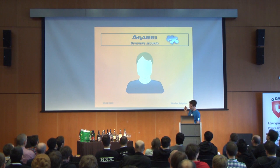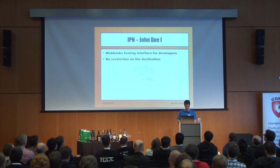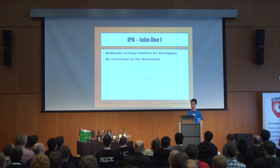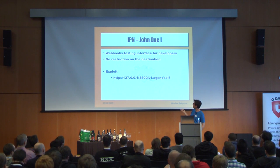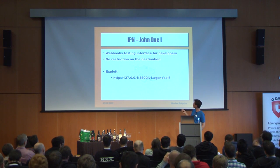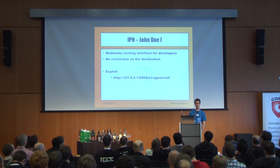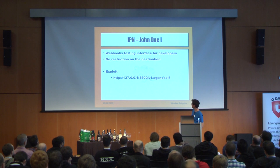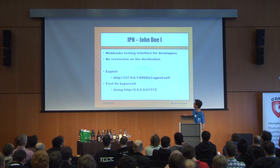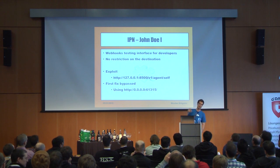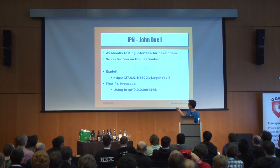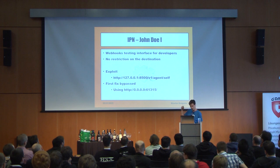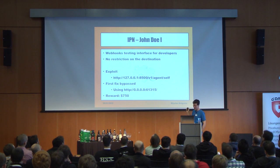A private bounty program — let's call it John Doe number one. Callbacks, again, with no restriction — absolutely wide open. I port-scanned the loopback interface, found the default port of Consul, and was able to interact with the agent and retrieve information. They fixed the bug, then I used 0.0.0.0 to bypass the fix. I also found the SSH port. $750 for this one.